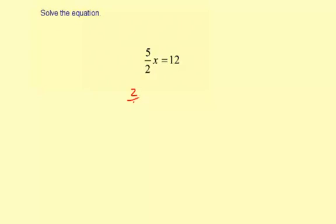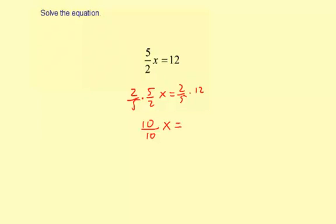So it's going to be 2 fifths times 5 halves times x equals 2 fifths times 12. So multiplying over here, 2 times 5 is 10, divided by 5 times 2, which is 10. And then you get x equals...